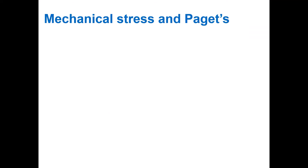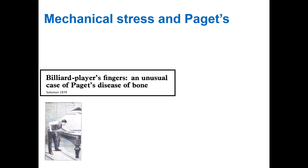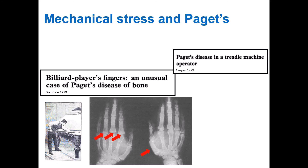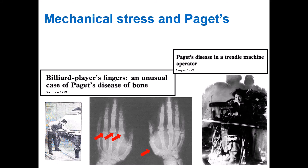Another environmental factor implicated in Paget's disease is mechanical overloading of bones. This is based on anecdotal evidence from the 1970s — for example, the case of a billiard player who developed Paget's disease in his fingers, which is a very unusual site, or a treadle machine operator who developed the condition in the leg operating the machine but not the other leg.